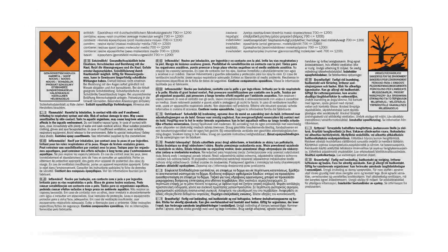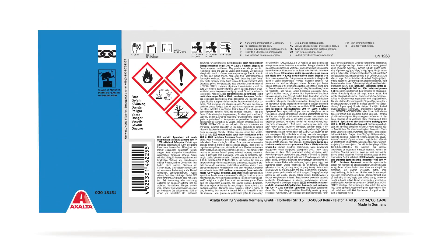First, let's take one last look at the familiar hazard label. Its structure, showing hazard pictograms and phrases, was clear and recognized. Now let's explore the CLP compliant label, which incorporates new design elements to help communicate important safety information that you need to know at a glance.